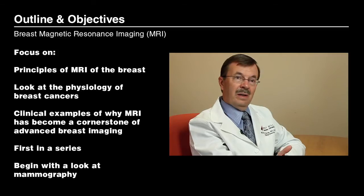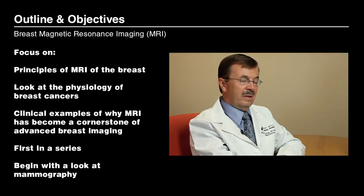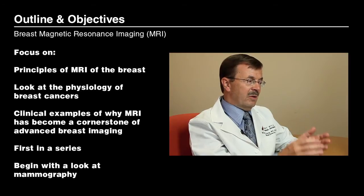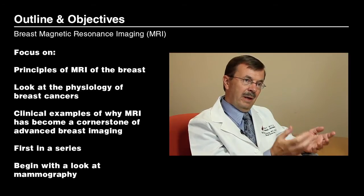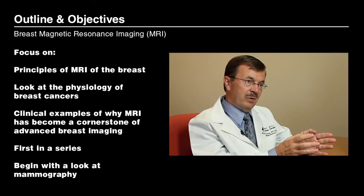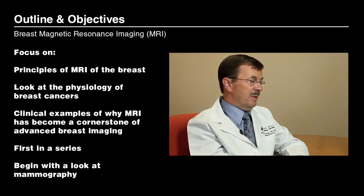What we'll be covering today is the first in a series of talks where we're going to discuss some of the basic principles of magnetic resonance imaging — basically what it is, how it works, and why we use it. We're going to focus on some of the principles behind the MRI of the breast. In order to do so, it'll be important for us to take a short time to look at the physiology of breast cancer — that is, what is different about the biology of breast cancer than normal tissues that allows us to see it so well with MR imaging.